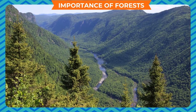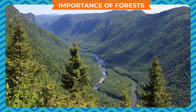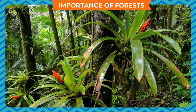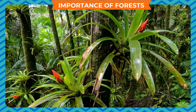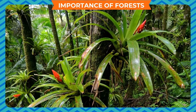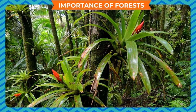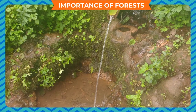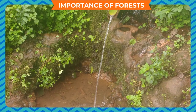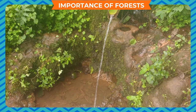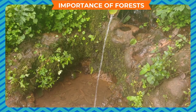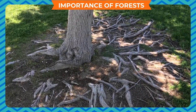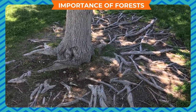Rainwater falls on the leaves of trees and then drips slowly on the forest floor. Thus, water does not collect and stagnate on the forest floor. This prevents flooding. The roots of the trees prevent soil erosion and keep the soil particles bound by their roots.